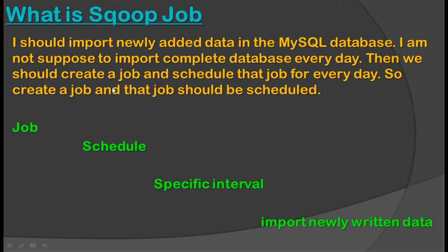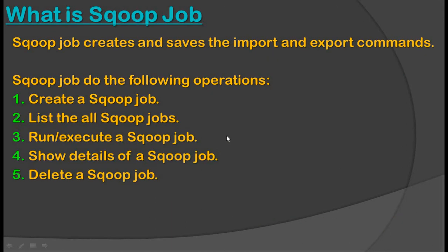We can create a job, schedule it, and specify a specific interval. After doing these things we can import newly added data. A Sqoop job creates and saves import and export commands. Let's see what operations a Sqoop job performs.